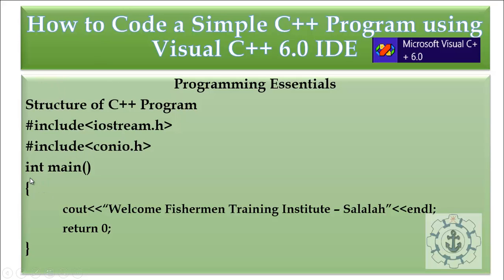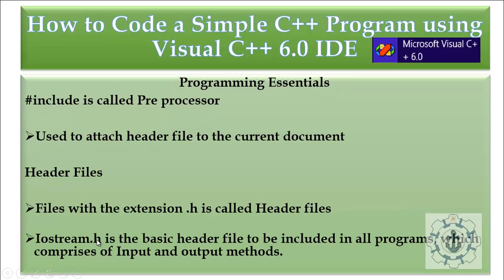Next, moving to the main method. The main method is an entry point for a program. Whenever a compiler starts reading your program, the first line read by the compiler will be integer main or void main — either can be used. The cout statement is used to display any information to the user during runtime. If you are using void main, there is no need to return a value. If you are using integer main, you should return an integer value.